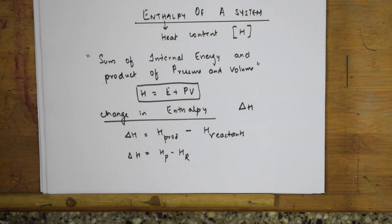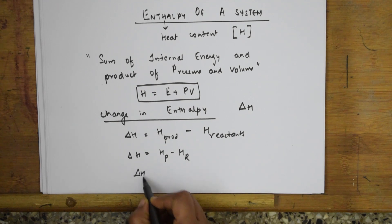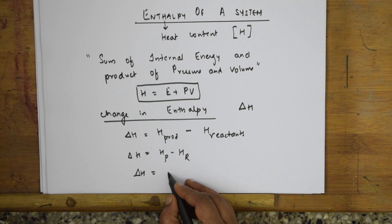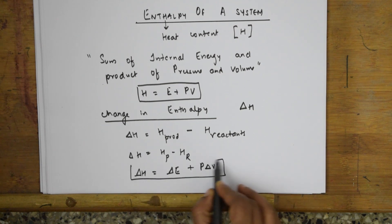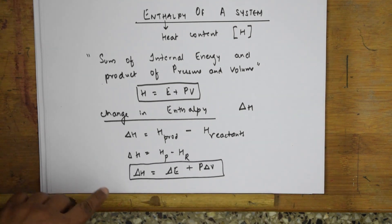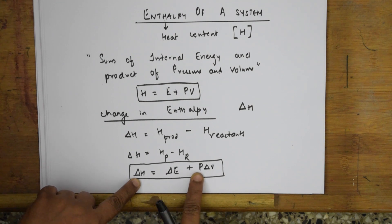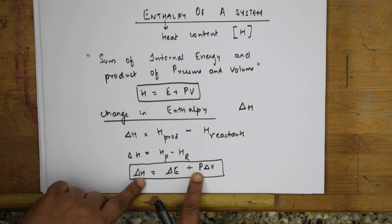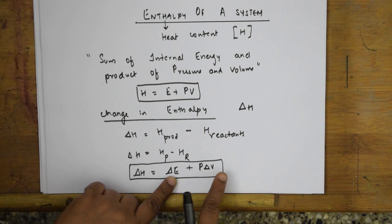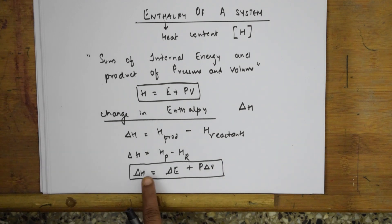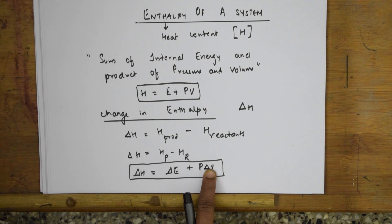This same change in enthalpy can also be written as delta H = delta E + P·delta V. Delta H is the heat change in a reaction at constant pressure, while delta E is the heat change at constant volume. If volume is kept constant, we get delta E; if pressure is kept constant, we get delta H.